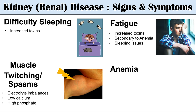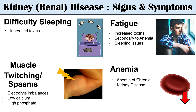We can also see anemia in kidney disease — low red blood cells or low hemoglobin — known as anemia of chronic kidney disease. This often occurs later in the disease process. The kidney produces erythropoietin (EPO), which stimulates the bone marrow to produce red blood cells. As the kidney becomes more damaged, it produces less and less EPO, leading to fewer red blood cells and this anemia of chronic kidney disease.